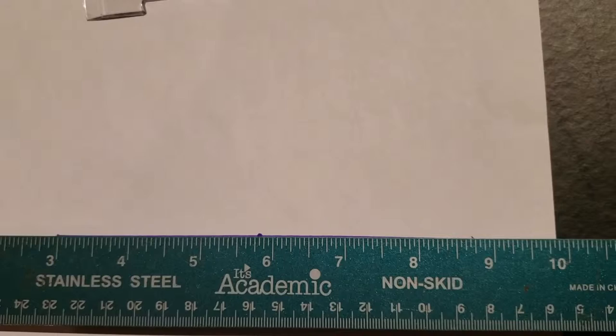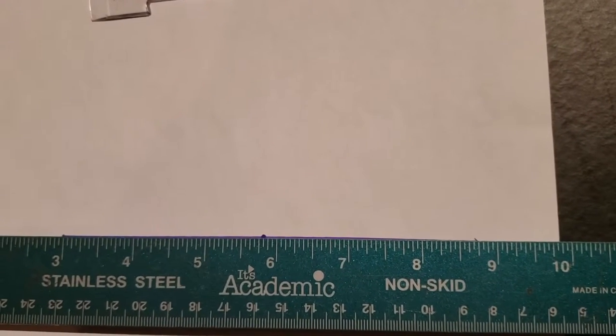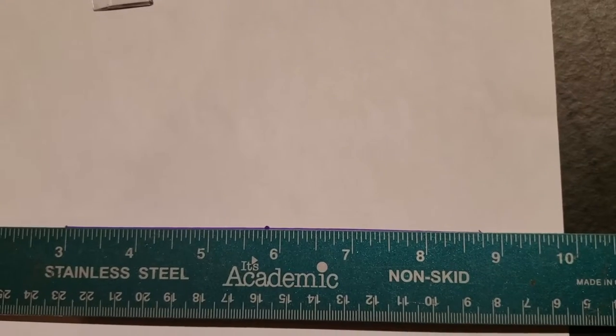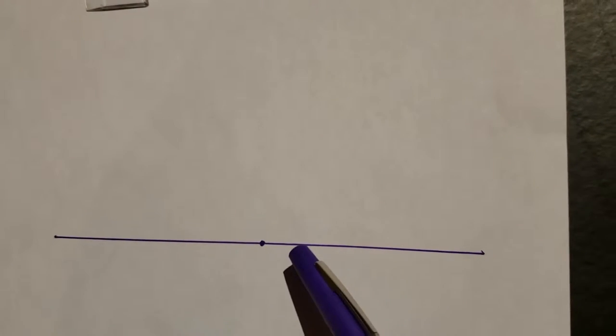An easy way to use protractors is to first draw a straight line using either the bottom of the protractor that's straight or a ruler. Draw your line and pick a dot around which you would like to make your angle.